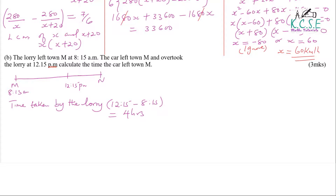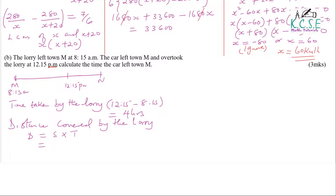The next thing is to get the distance covered by the lorry within these 4 hours. Distance is given by speed times time. The speed of the lorry is 60 kilometers per hour, multiplied by 4 hours, giving a distance of 240 kilometers.